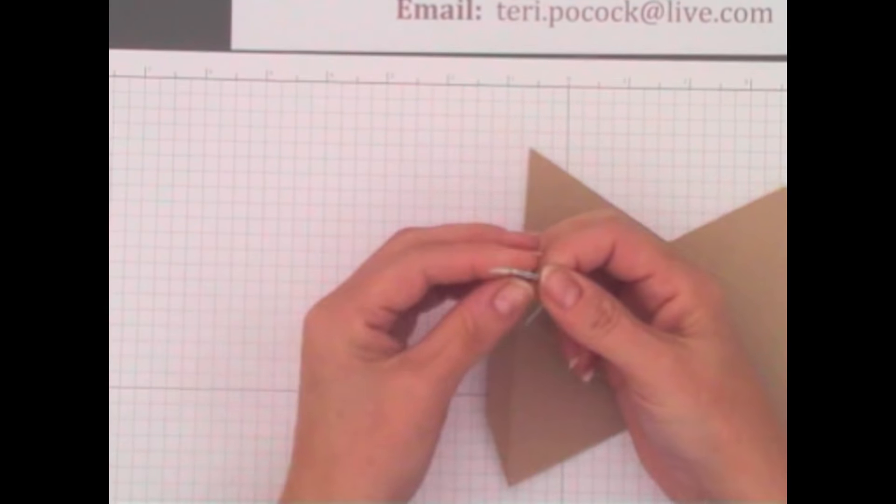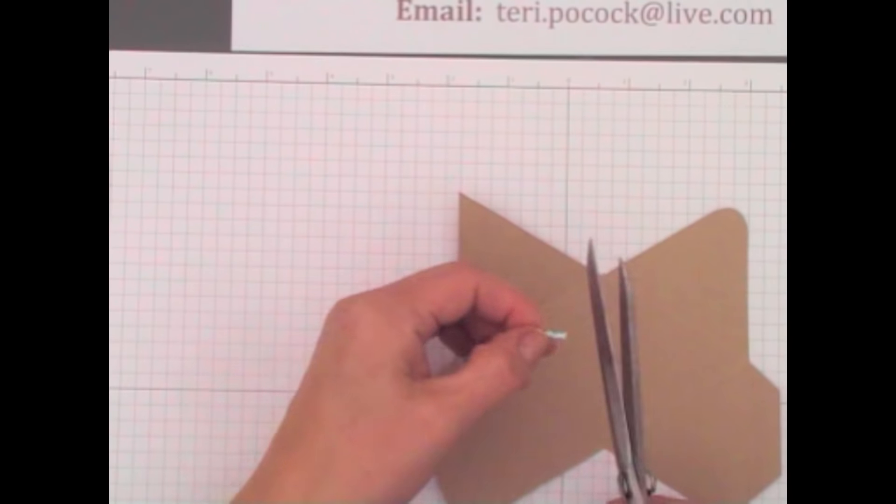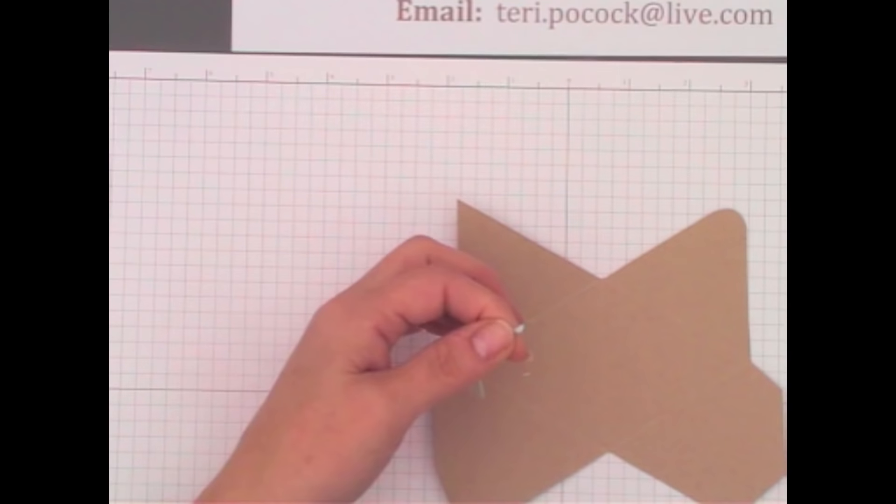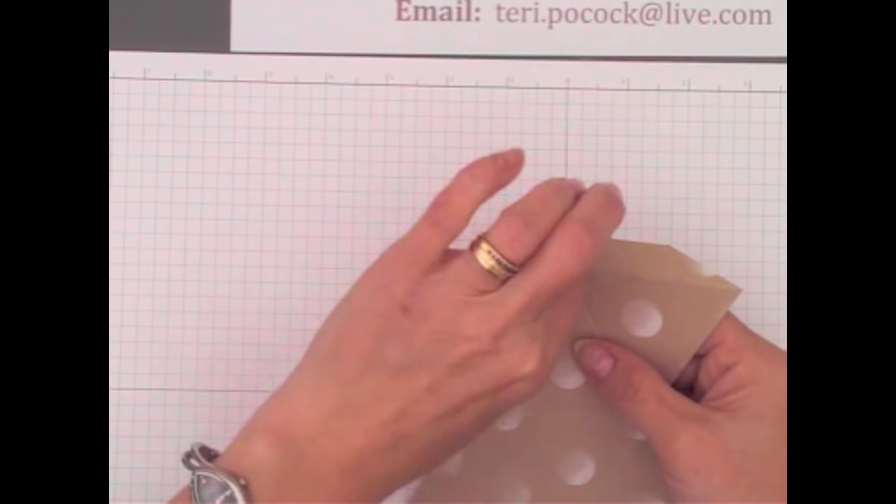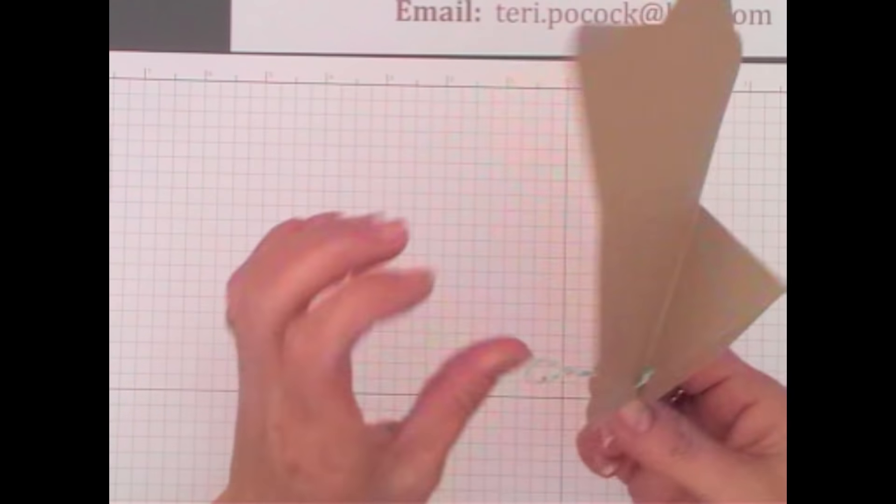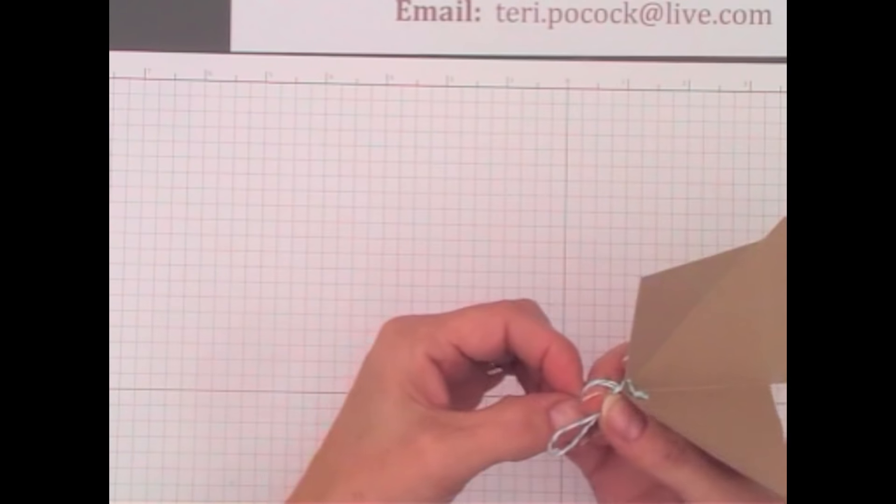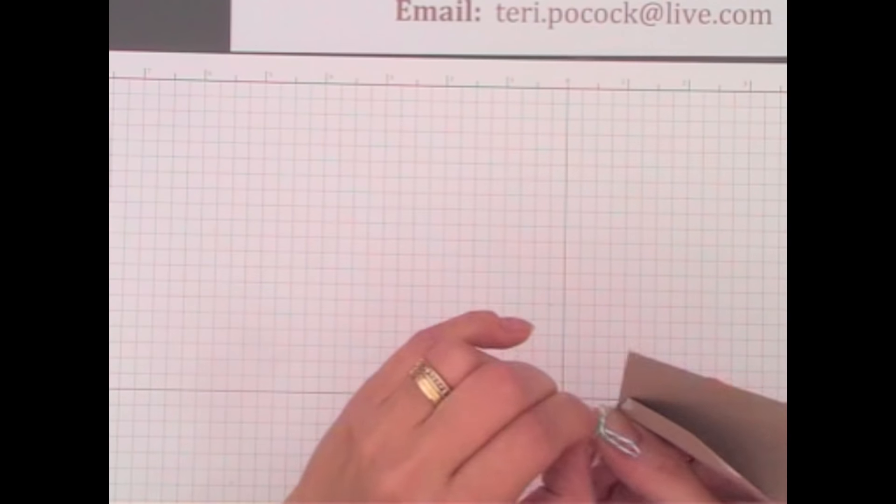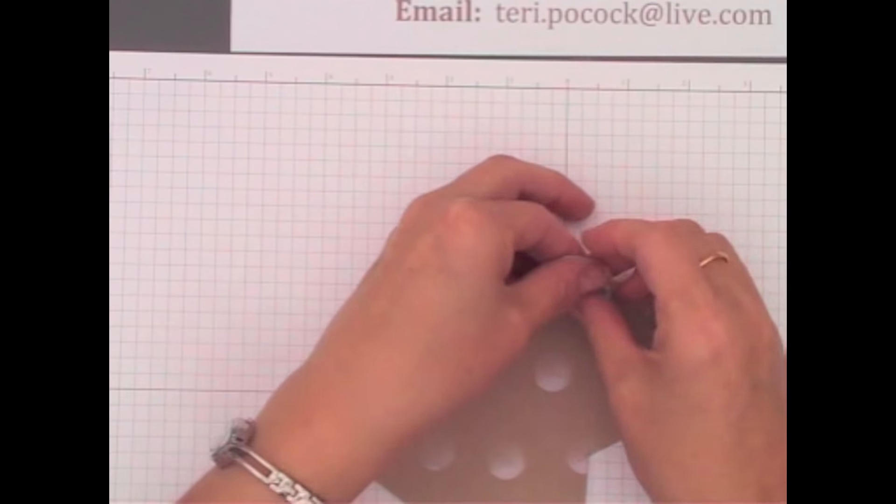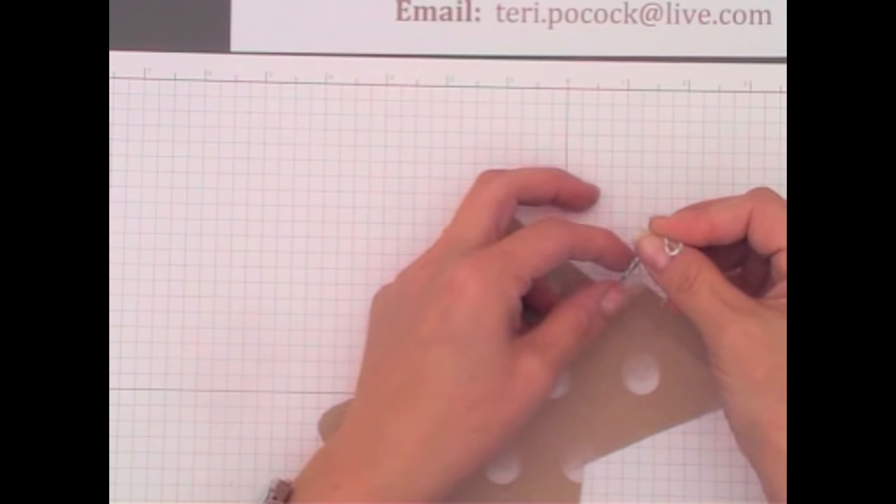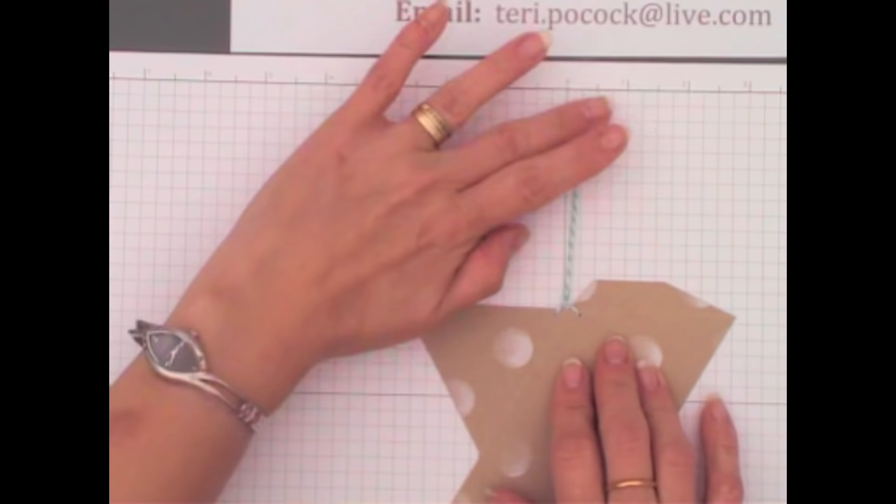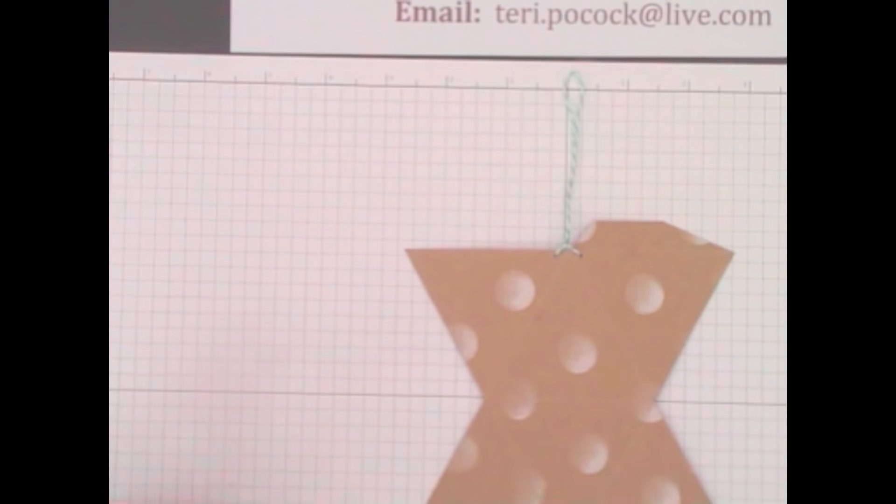Cut off any excess. Then pull that loop through to the front and tie another knot. It's a bit tricky because you've got the cardstock in the way. But tie another knot as close to that cardstock as you can get it. And then we're ready to decorate.